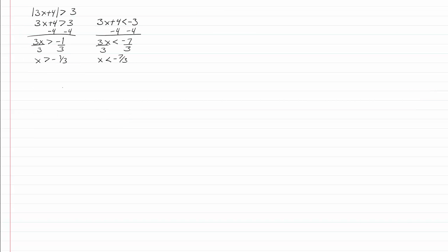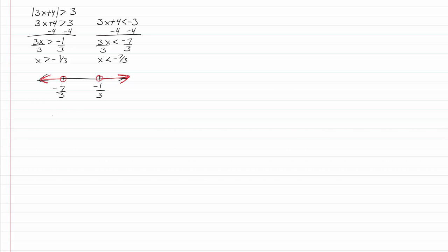Let's graph that. If I draw my line, negative seven-thirds is going to be down here and negative one-third will be right here. We have the open dot because we do not have an equal. X is greater than negative one-third, so that means it's going to positive infinity. X is less than negative seven-thirds, so that's going to negative infinity. Our interval notation is going to be from negative infinity to negative seven-thirds, parenthesis, union, negative one-third to infinity.